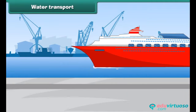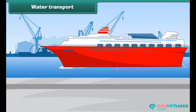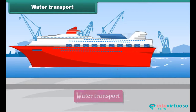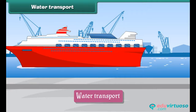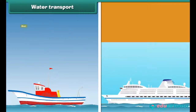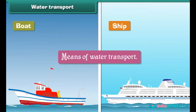Water transport. The movement of goods and passengers on water is called water transport. The vehicles that carry goods and passengers through waterways are called means of water transport. Boats and ships are the means of water transport.